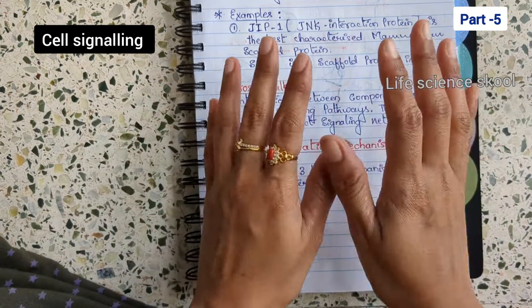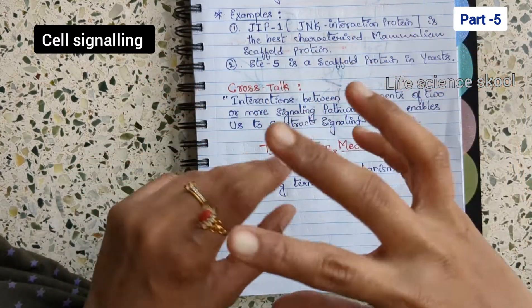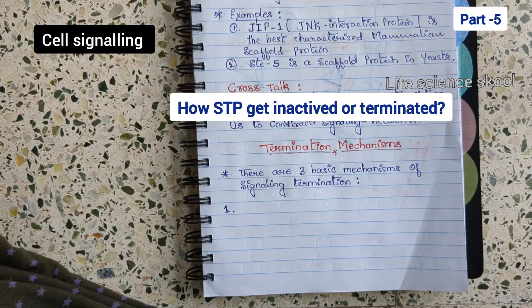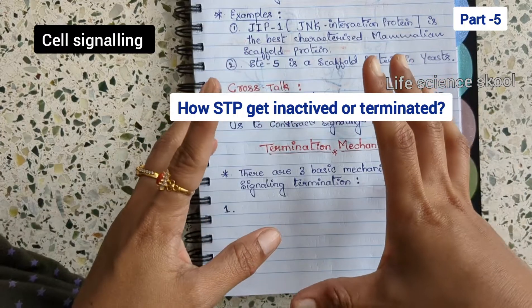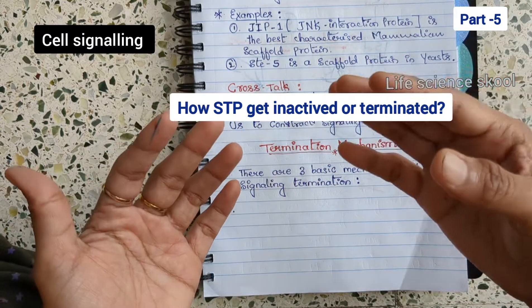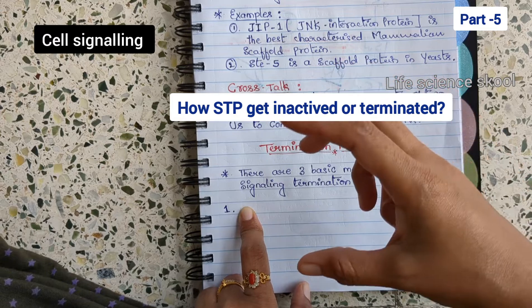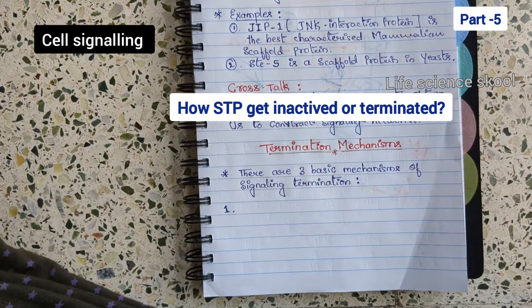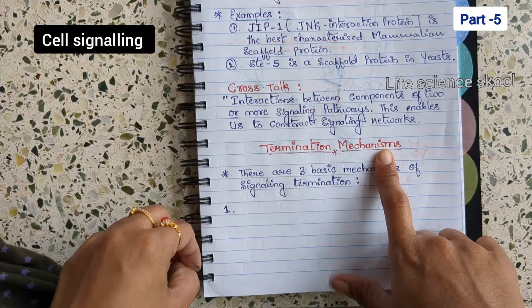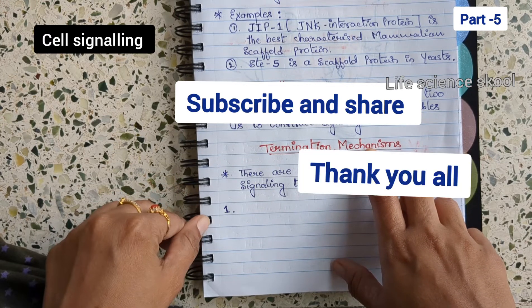We have now studied signaling mediators and how the signal transduction pathway is activated. The next question is how the signaling pathway is inactivated — because after a response has been given to the stimulus, we have to stop it; otherwise the process will continuously occur. In the next video, we will cover the specific mechanisms for stopping the signaling pathway, called termination mechanisms. I hope this video was helpful — please share and subscribe.